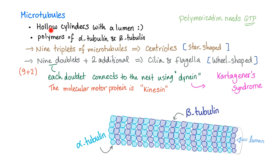Microtubules are hollow cylinders made of polymers of alpha-tubulin and beta-tubulin. Nine triplets of microtubules form a centriole. Nine doublets plus two additional microtubules in the center give you cilia or flagella. The doublets connect to adjacent doublets through dynein. A defect in dynein causes Kartagener's syndrome. Microtubules can form cilia, flagella, or centrioles.